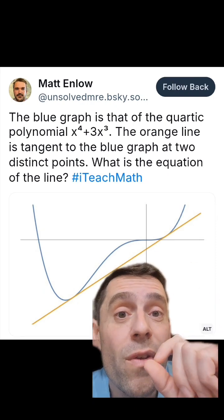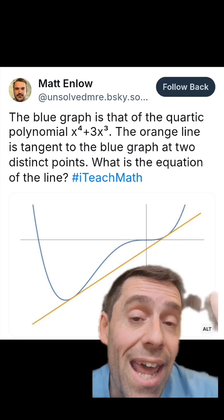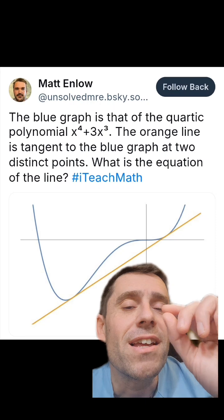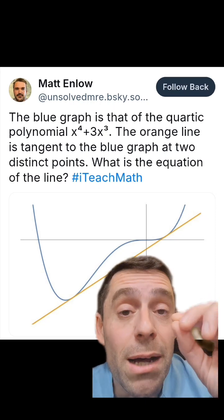And if you factor that out, you get a quadratic polynomial in x and a, and you're looking for the point a such that that quadratic has a double root.